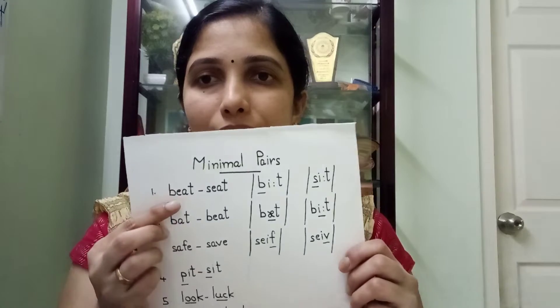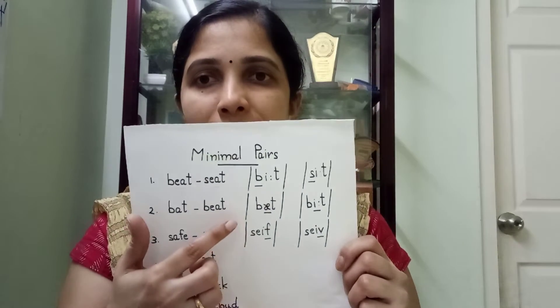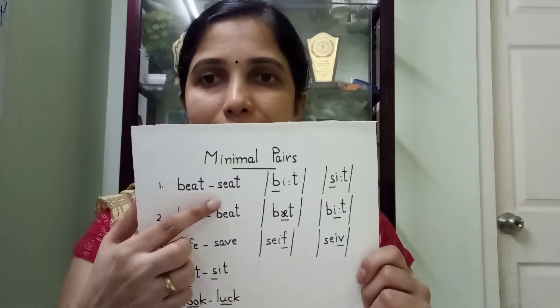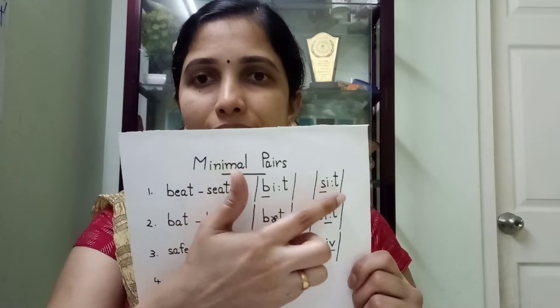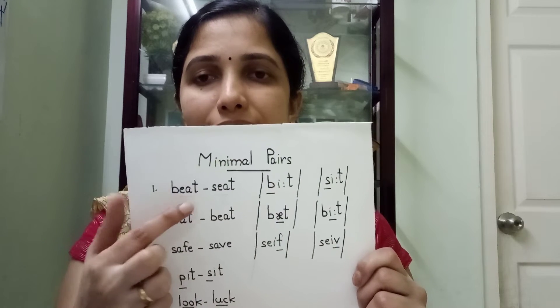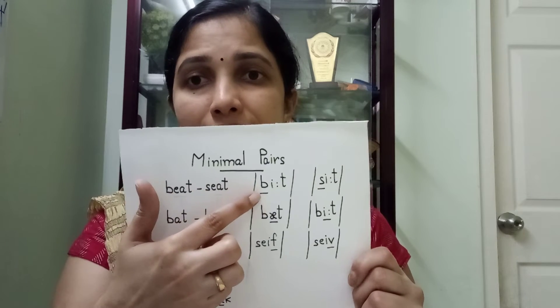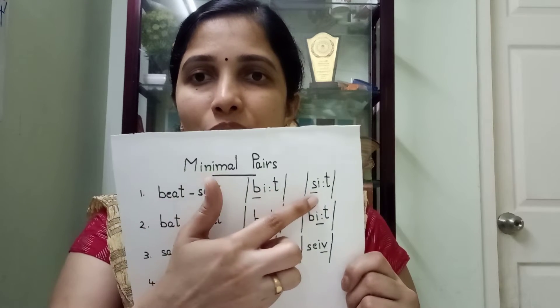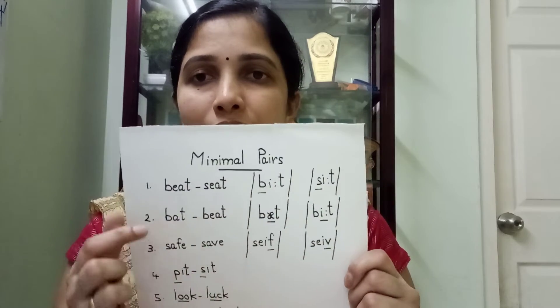For example, beat and seat — B-E-A-T and S-E-A-T. Beat and seat constitute a minimal pair as they differ from each other in the initial consonant sounds, that is the consonant sounds /b/ and /s/.